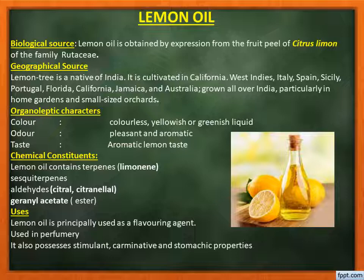The oil is colorless, yellowish, or greenish liquid with a pleasant and aromatic odor and lemon taste. Chemical constituents include terpenes — the important constituent being limonene — sesquiterpenes, aldehydes like citral and citronellal, and geranyl acetate. Lemon oil is used as a flavoring agent in many pharmaceutical formulations and in perfumery. It also possesses stimulant, carminative, and stomachic properties.